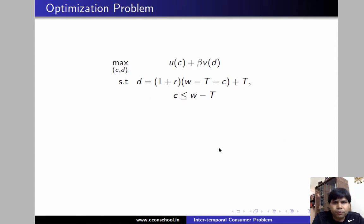Here is the problem. We will maximize the utility. So the utility is UC plus beta VD and we want to maximize it subject to the constraint. The first constraint is his consumption in period 2 given by D will be equal to his savings in period 1 which is W minus T minus C.